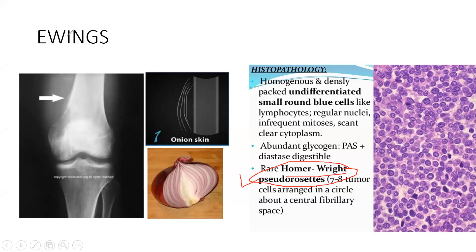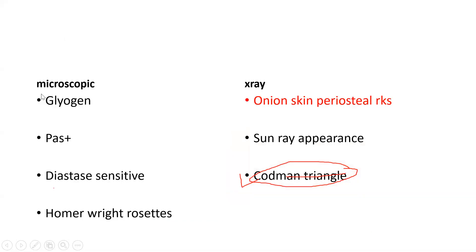The tumor is glycogen PAS-positive and diastase-sensitive. Histologically, there are undifferentiated rounded blue cells — all undifferentiated round blue cells. In Ewing's sarcoma, the microscopic picture is very important; in other tumors the microscopic was not highlighted, but in Ewing's it is crucial.